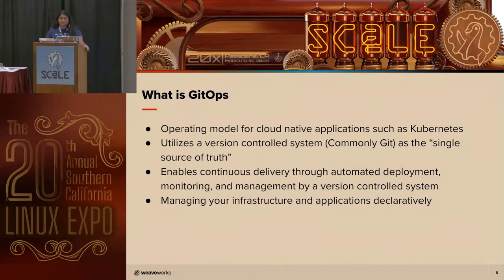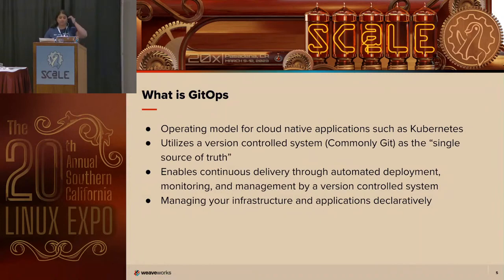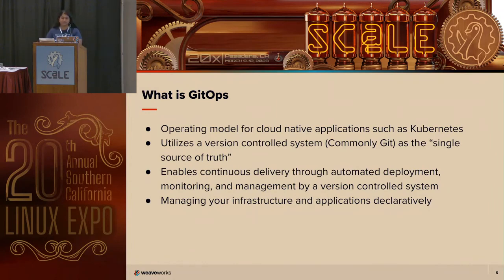So what is GitOps? GitOps is the operating model for cloud-native applications such as Kubernetes, but I want to highlight it's not just for Kubernetes — if you're doing a multi-cloud infrastructure, you can still use GitOps. It utilizes a version-controlled system, most commonly Git, but you can also use other sources like an OCI repository. It uses that as a single source of truth, enabling continuous delivery through automated deployment, monitoring, and management. The whole idea is that you're managing your infrastructure and applications declaratively.